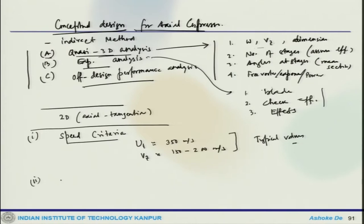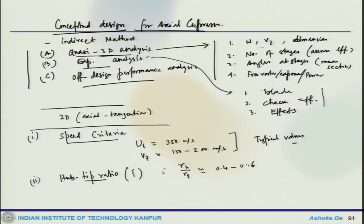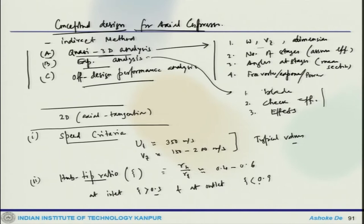The second parameter is the hub-tip ratio, denoted xi. The typical value of xi, which is R_H to R_T, would be 0.4 to 0.6. At inlet, xi is 0.3, and at outlet it is 0.9. For a fan, this value would be somewhere around 0.2. These are some of the values that can be used.